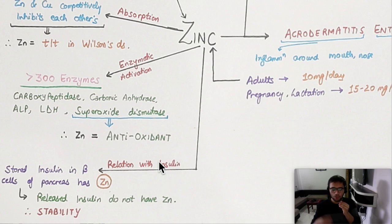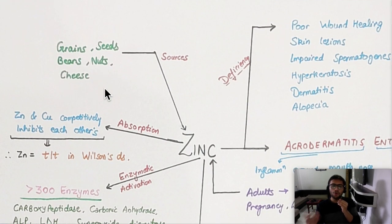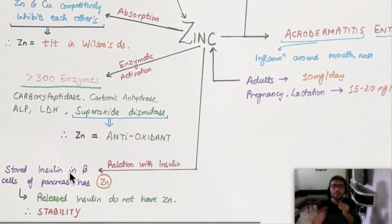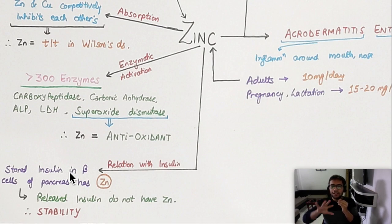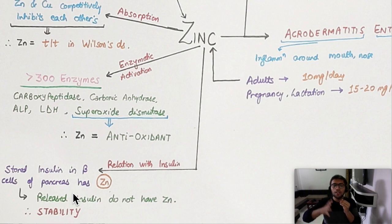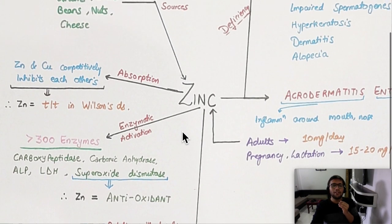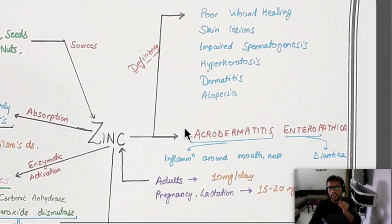One important property of zinc is its relation with insulin. Whenever insulin is getting stored, it requires zinc for its stability. But when insulin is released, it does not have zinc — zinc is only needed for storage. This is why whenever you study insulin preparations in pharmacology, you will see zinc written alongside insulin, such as in lente insulin.